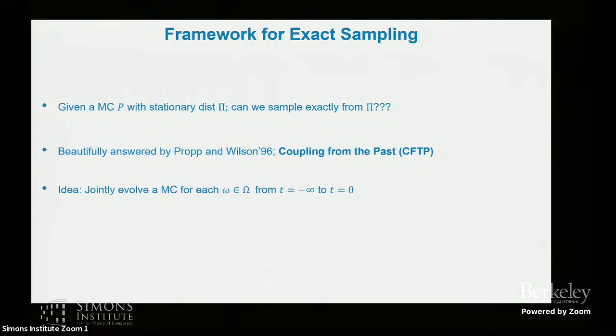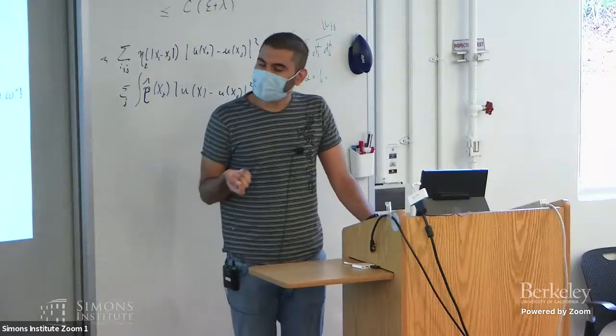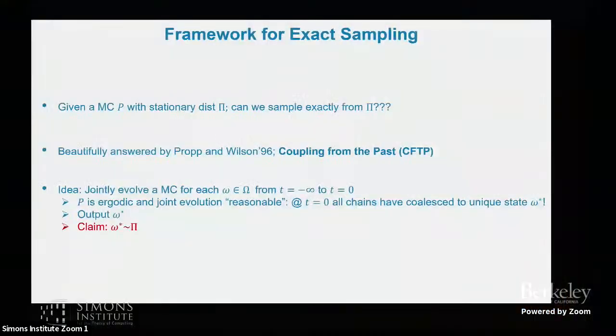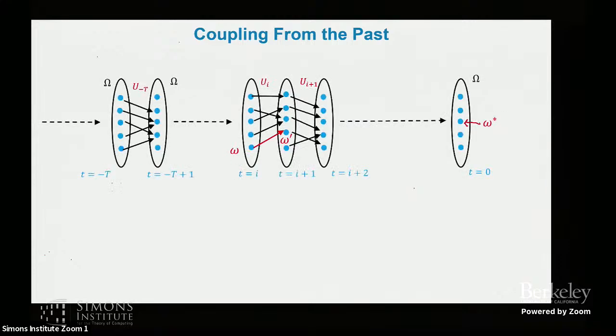So the idea here is very simple. It says that, let's jointly evolve a Markov chain from t equal to minus infinity to zero. And you can see the time indexes are now negative. So that's why that word past is there. And so you are running a Markov chain from each state. If that joint evolution rule is reasonable, you expect that by the time t equal to zero, all the chains would have coalesced to a unique state, omega star. And you just output omega star. That's the algorithm. Of course, now the point is, omega star is distributed exactly according to the distribution pi. That is the claim they prove. And the other thing is how do you run this algorithmically? Because you can't run it for so many steps. That doesn't make sense.